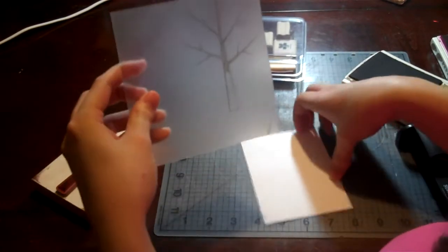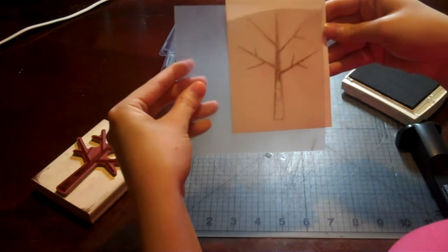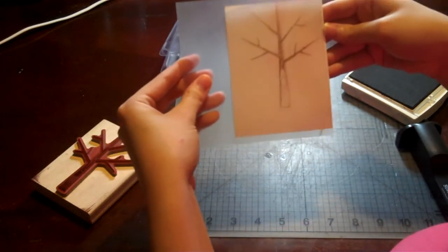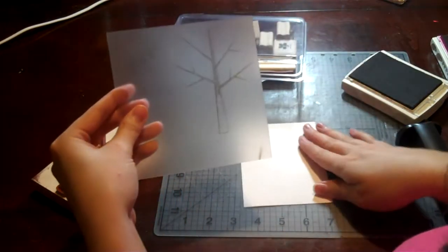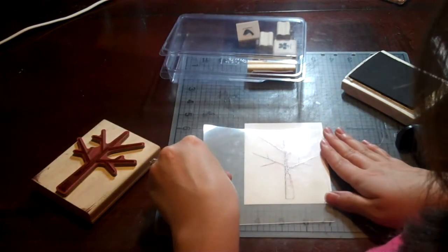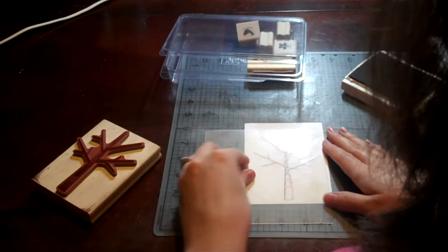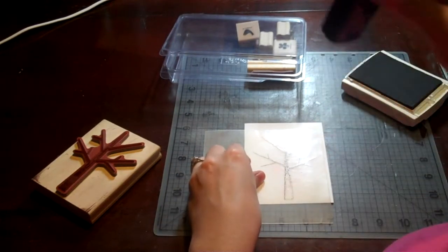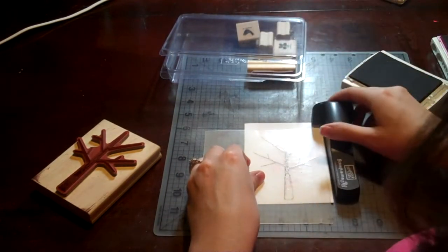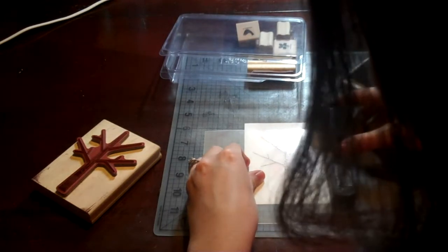From there you can see that you can line it up however you want it on your paper. I'm going to set my paper down, put my tree down exactly where I want it. Then I'm going to stick this piece of the Stampamajig back exactly in that plastic corner.